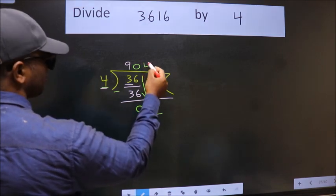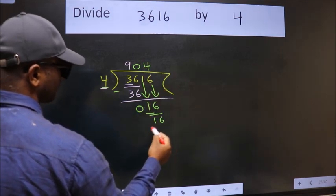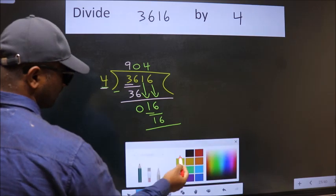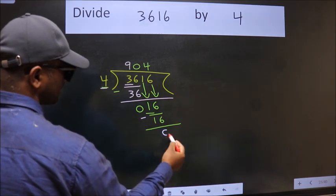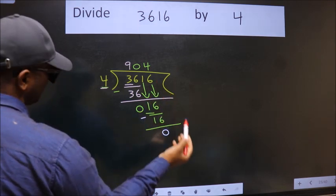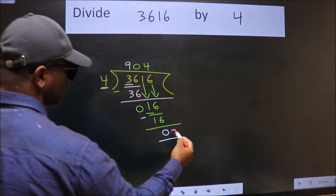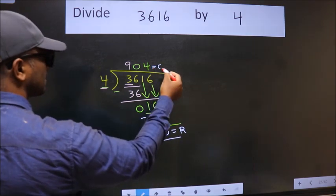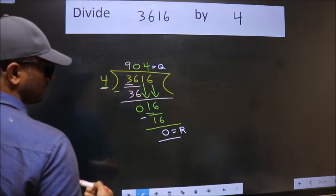Four fours, 16. Now we subtract, we get zero. No more numbers to bring down, so we stop here. This is our remainder, and this is our quotient.